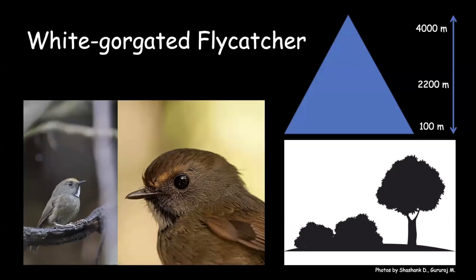There are two distinct populations of white-gorgeted flycatcher in northeast India — one north of the river Brahmaputra and one south of it. The one on the left is slightly paler than the one on the right. Both populations are very shy and rarely seen, always in the undergrowth. They always prefer dense evergreen undergrowth compared to other flycatchers in the same elevation and area.